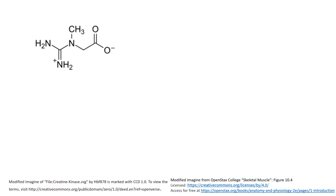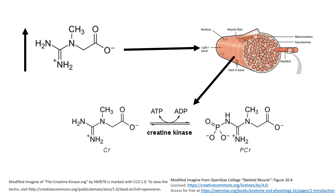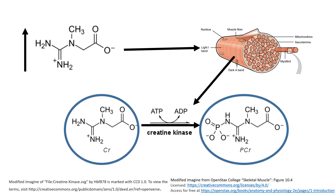The idea behind creatine supplementation is to take creatine in the form of a powder about 30 minutes before exercising. This should increase the amount of creatine within the bloodstream, resulting in more creatine going into muscle fibers. The muscle fibers may then take some of that extra creatine and turn it into phosphocreatine. Converting creatine into phosphocreatine involves the breakdown of ATP — the phosphate group actually comes from ATP — so this is an energy-consuming process, which is why it should be done before exercise. If done correctly, this theoretically increases the amount of phosphocreatine within muscle fibers.